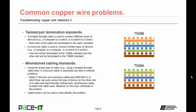A problem can arise when you have mismatched cabling standards. Using the wrong type of cable, as in using a straight-through cable when a crossover cable is specified, can lead to network problems. Many IT devices use a process called AutoMDI-MDIX in which they can auto-sense the type of device on the other end of the cable and electronically change their send/receive setup to match the cable used. But reliance on this may contribute to the problem. Cable testers can be used to help identify the problem in a mismatched cable standard.